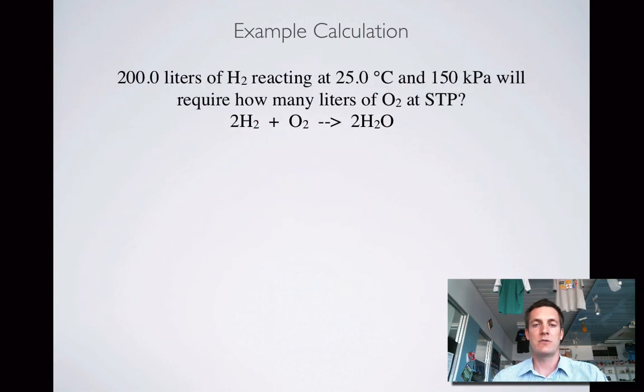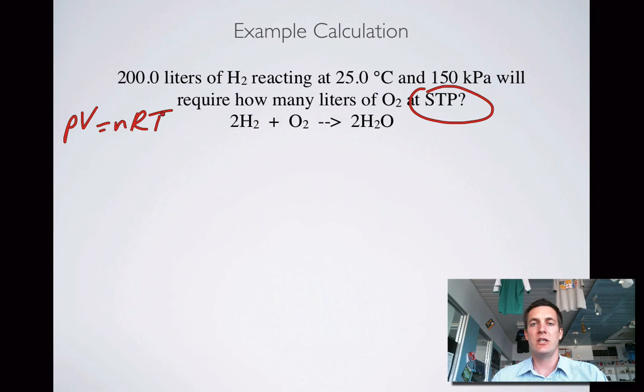Last example calculation for this film. We've got, we're given some volumes and temperatures and pressures, so it looks like PV equals nRT. Different conditions for the two gases. This one's at STP, so we can save ourselves a bit of hassle here. We can actually use that, or we can remember that one mole at STP occupies how much? 22.71 liters. That's changed.